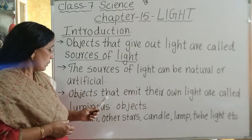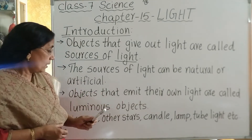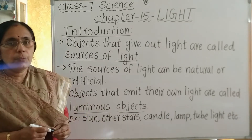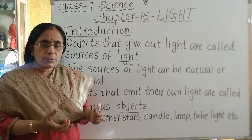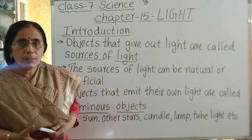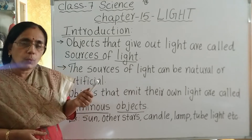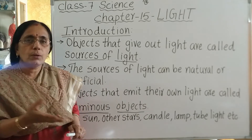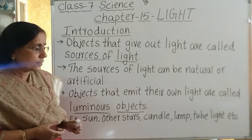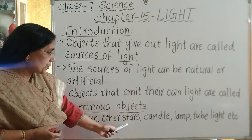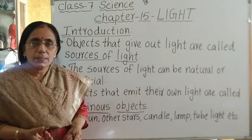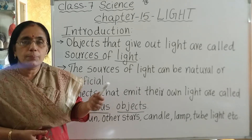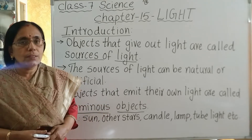The objects that emit their own light are called luminous objects. Around us there are many objects that give out light. These luminous objects can be either natural or manmade. Examples include sun and other stars as natural luminous objects, and candle, lamp, tube light, and electric bulb as artificial luminous objects.